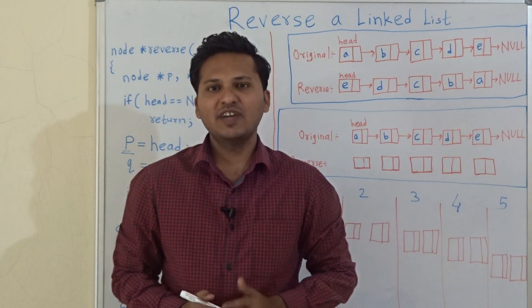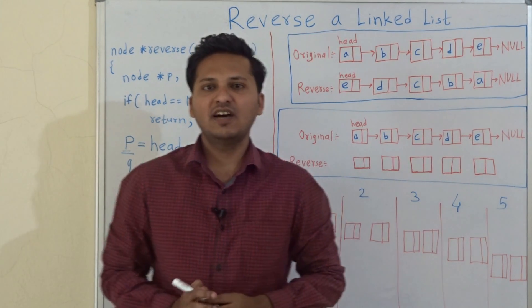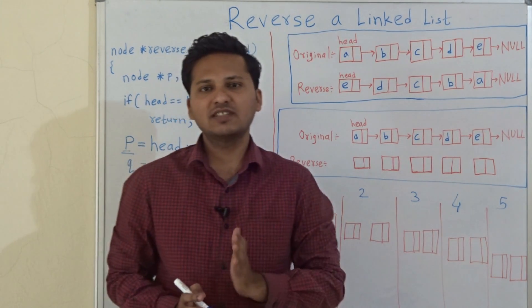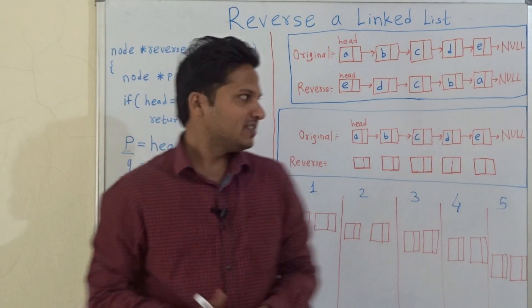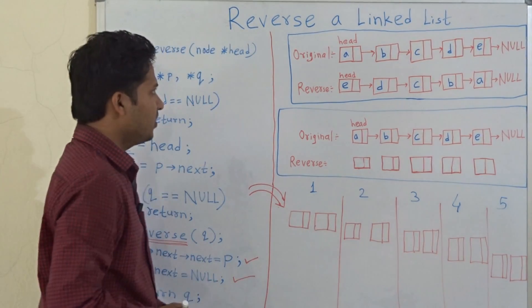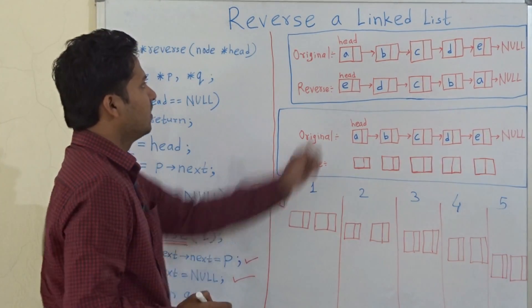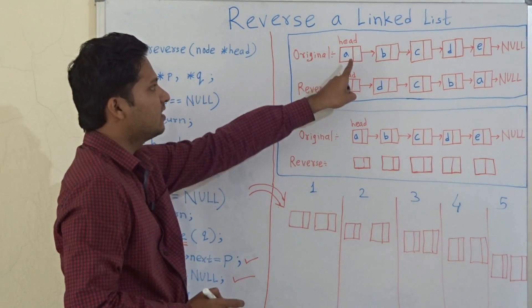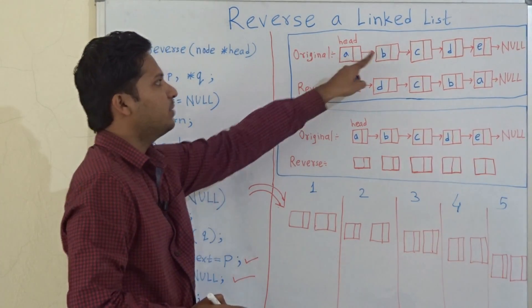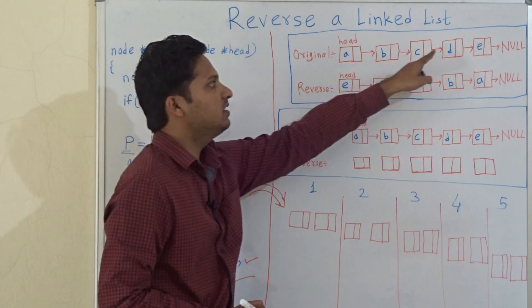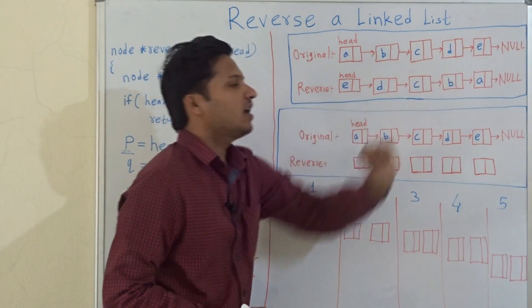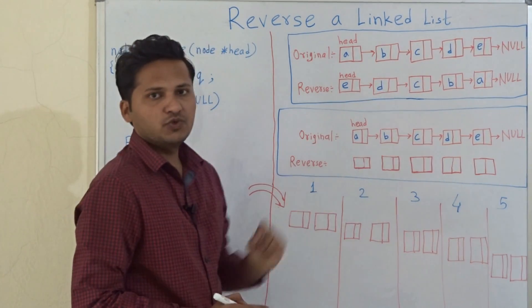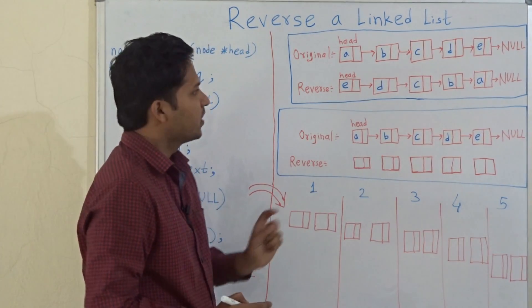Hello friends. Today we are going to see how to reverse a linked list. So let's see one example. Here is the linked list: A, B, C, D, E and the last node points to null.